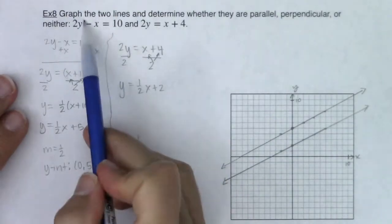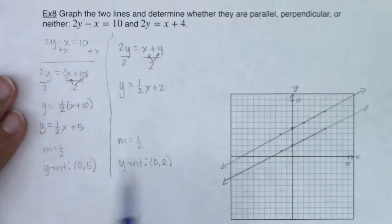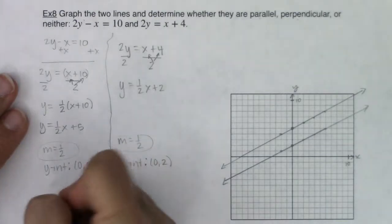So I've graphed the two lines and I want to determine if they're parallel, perpendicular, or neither. Well, if I look at their slopes, their slopes are the same. So because their slopes are equal, we know the lines are parallel.